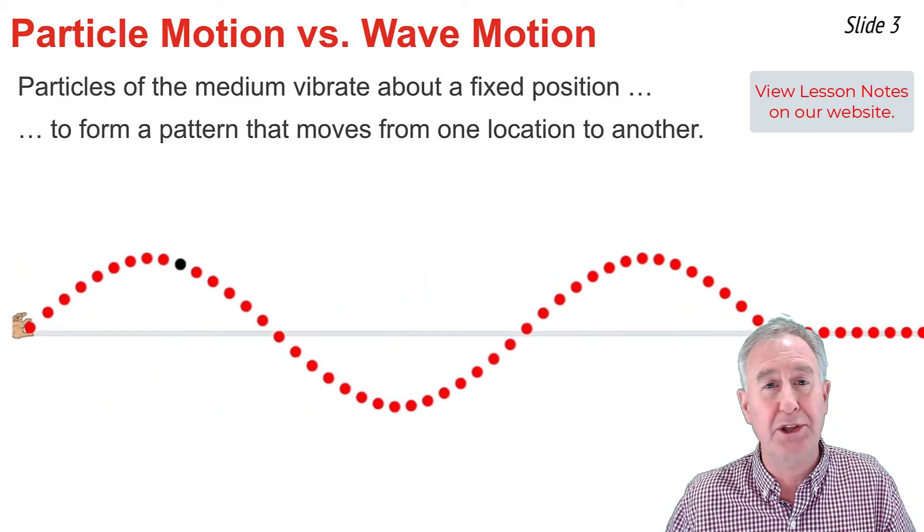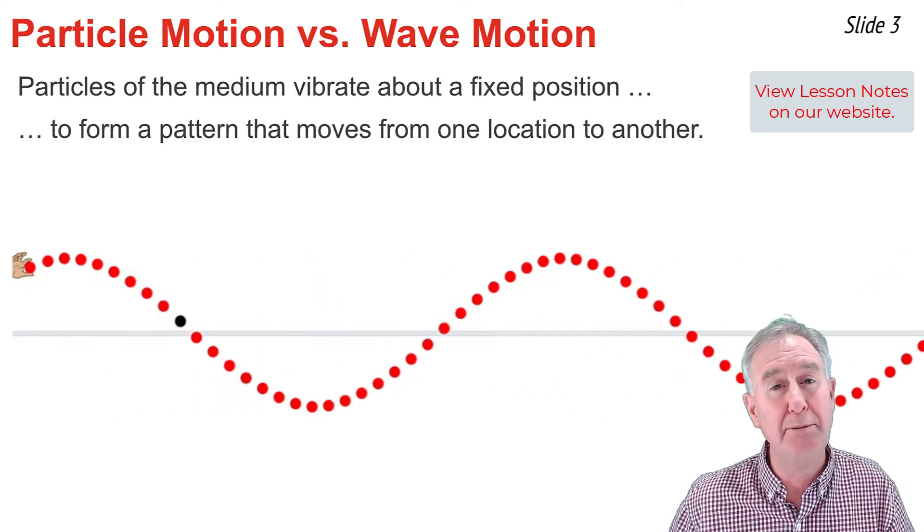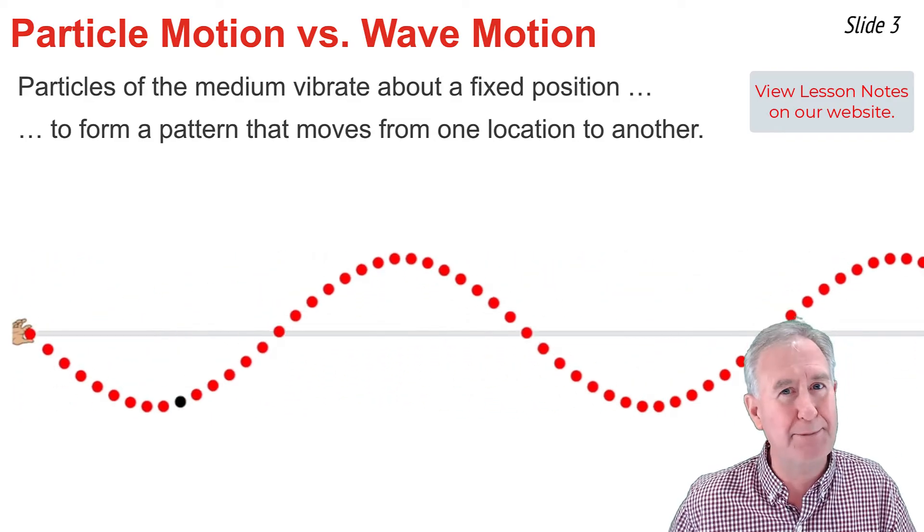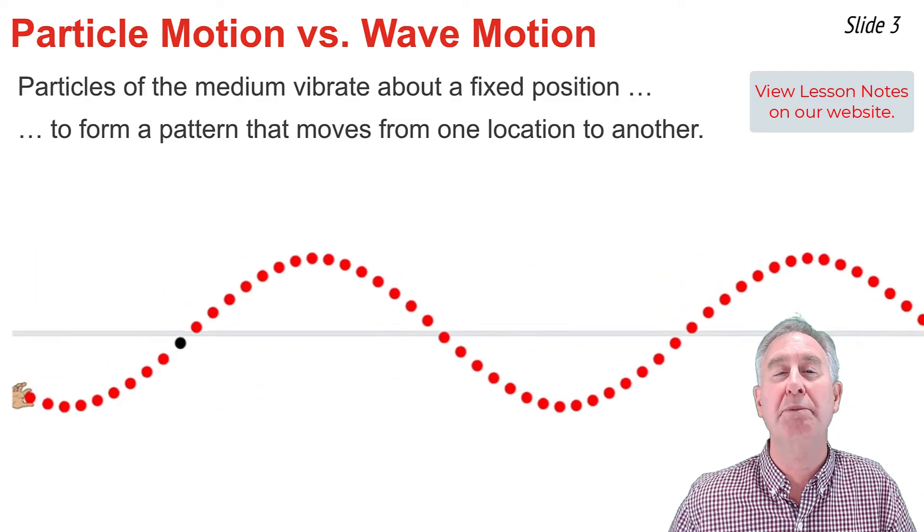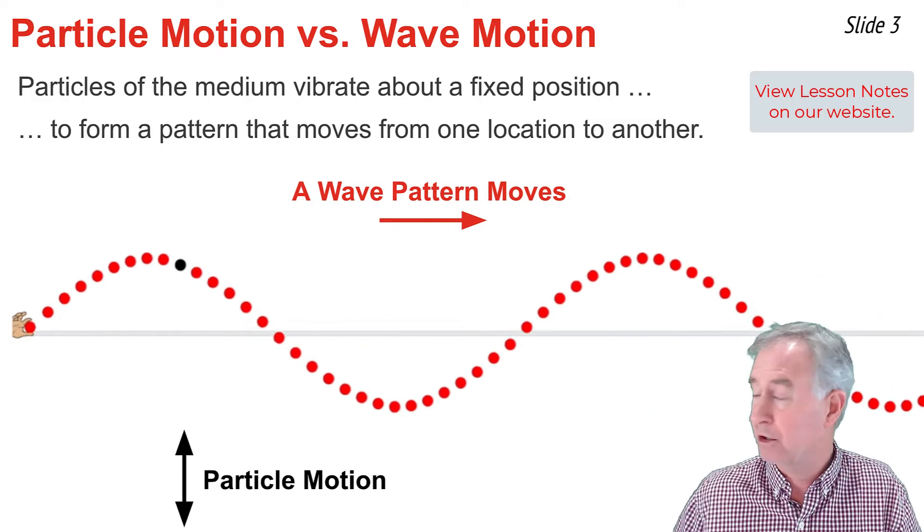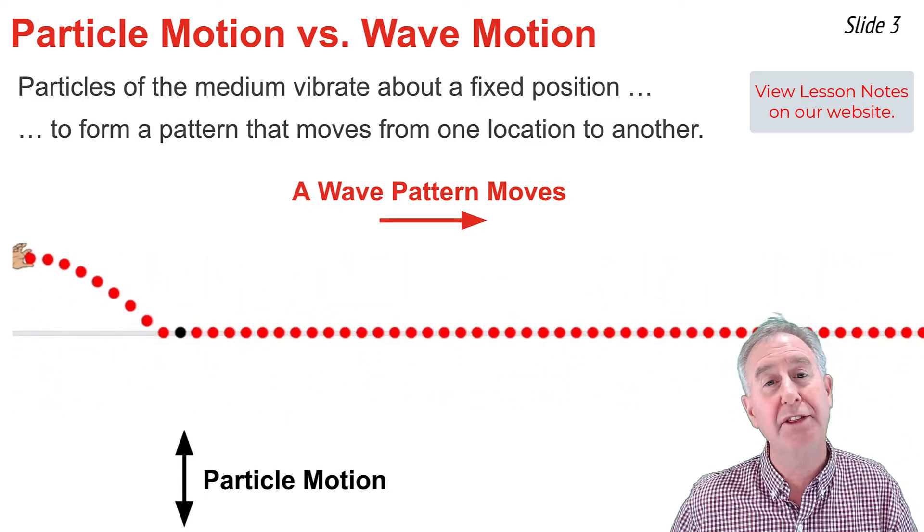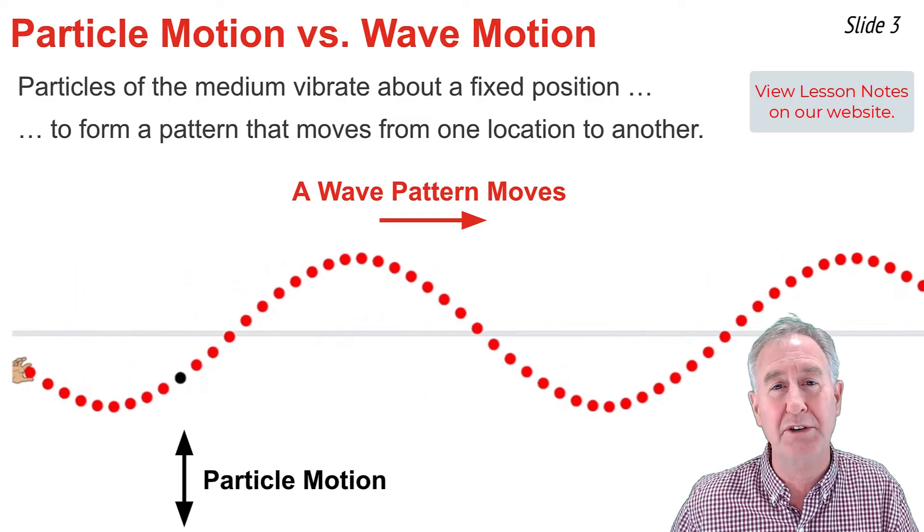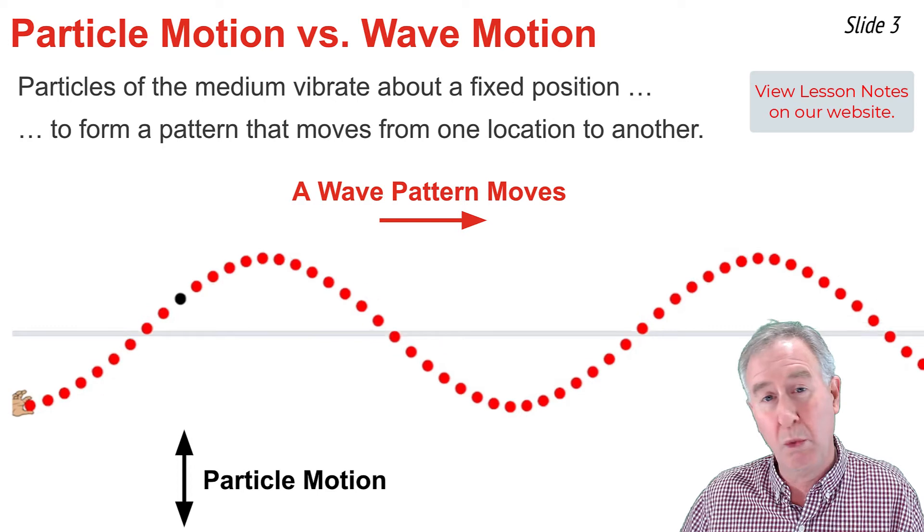As you see in this animation, the first particle of the medium is being vibrated up and down. Every particle in the medium thus vibrates up and down. This is what we mean by particle motion. But you also see a sine wave with a series of crests and troughs. And these crests and troughs move from the left side of the screen to the right side of the screen. This is what we mean by wave motion.